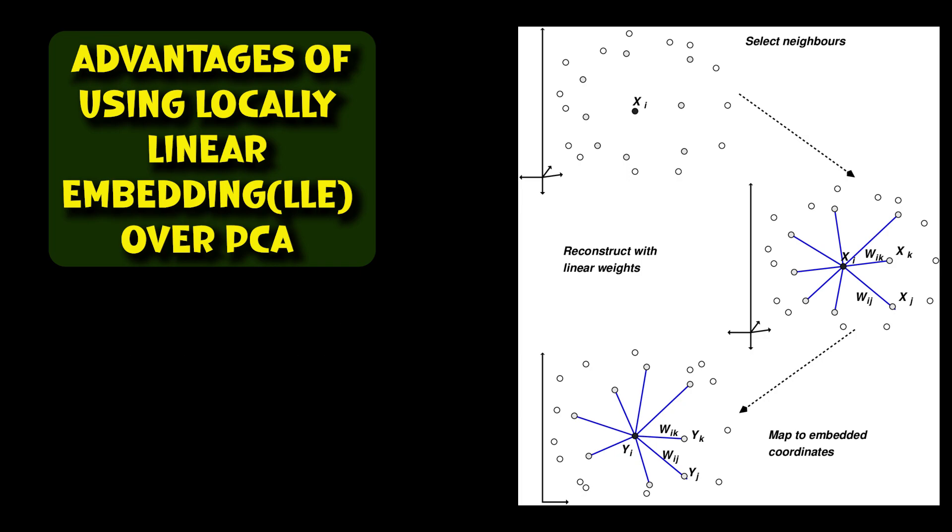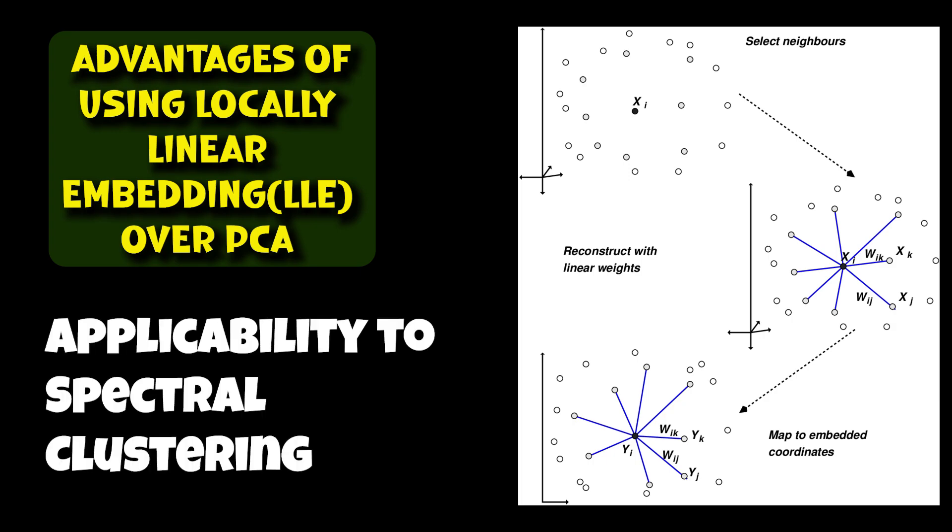The next advantage of LLE is about applicability to spectral clustering. LLE can be employed as a preprocessing step for spectral clustering algorithms, which are based on the eigenvectors of the Laplacian matrix. LLE's ability to preserve local relationships in the data can improve the performance of spectral clustering by creating a better low-dimensional representation of the data.